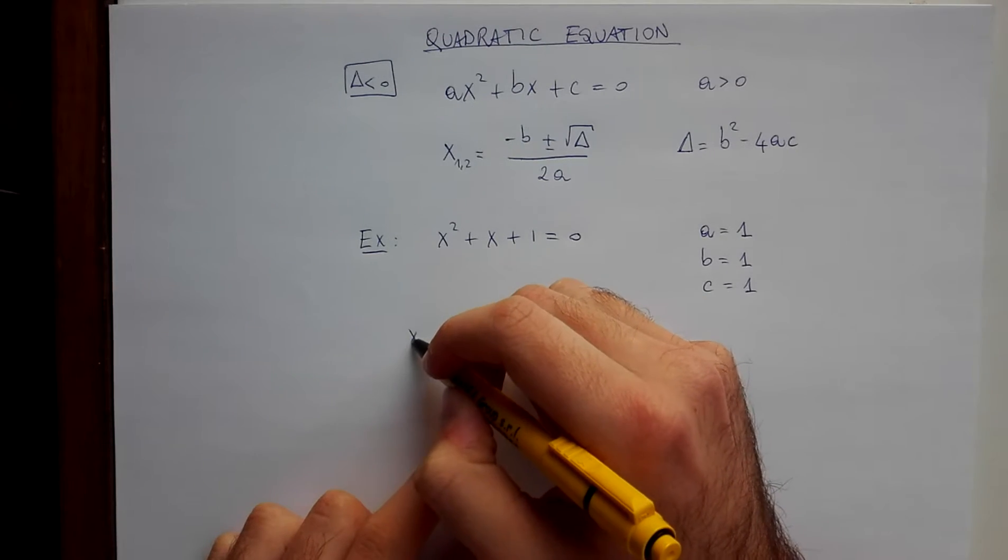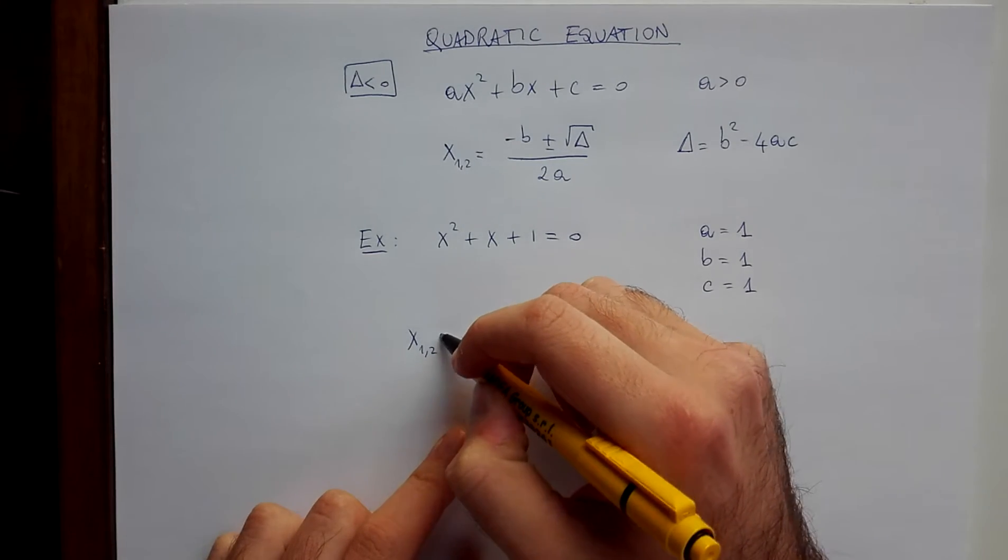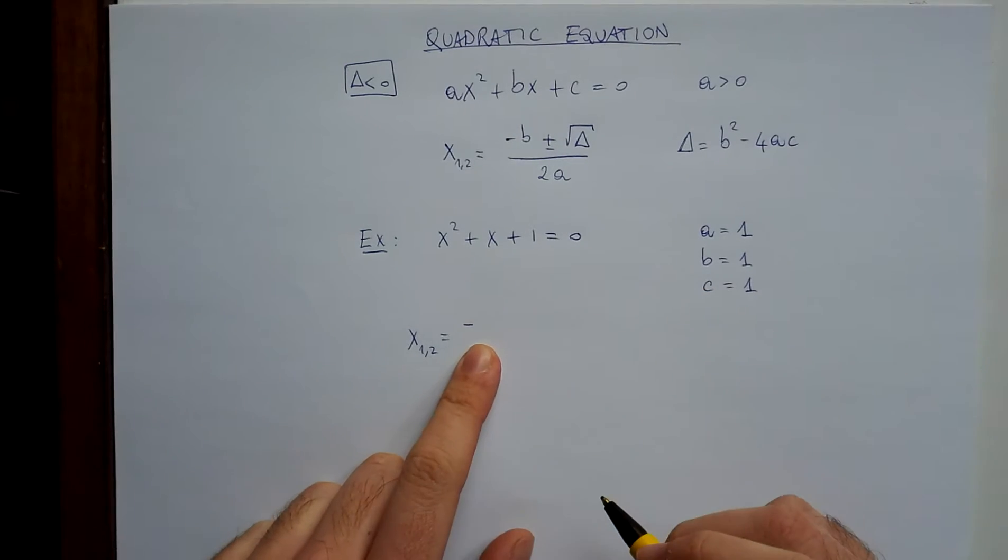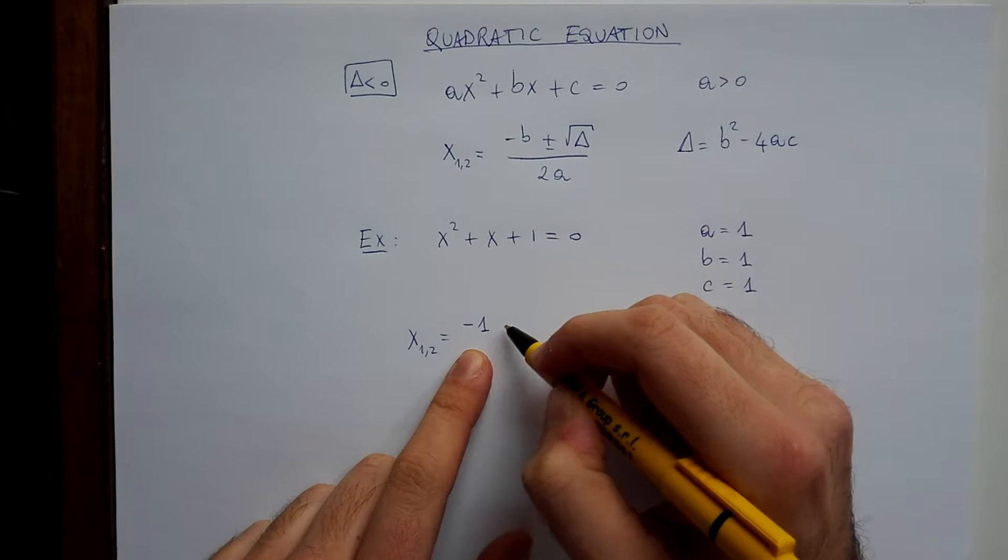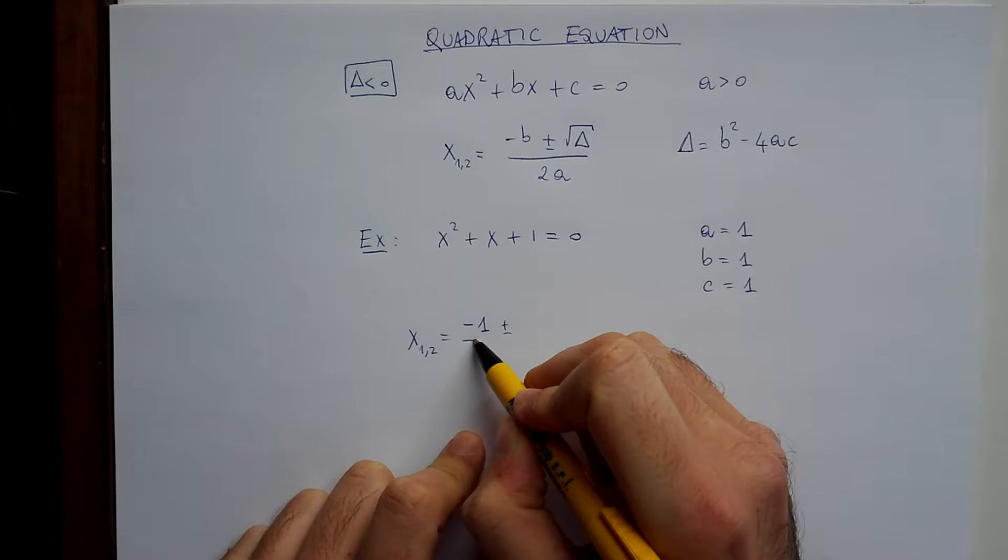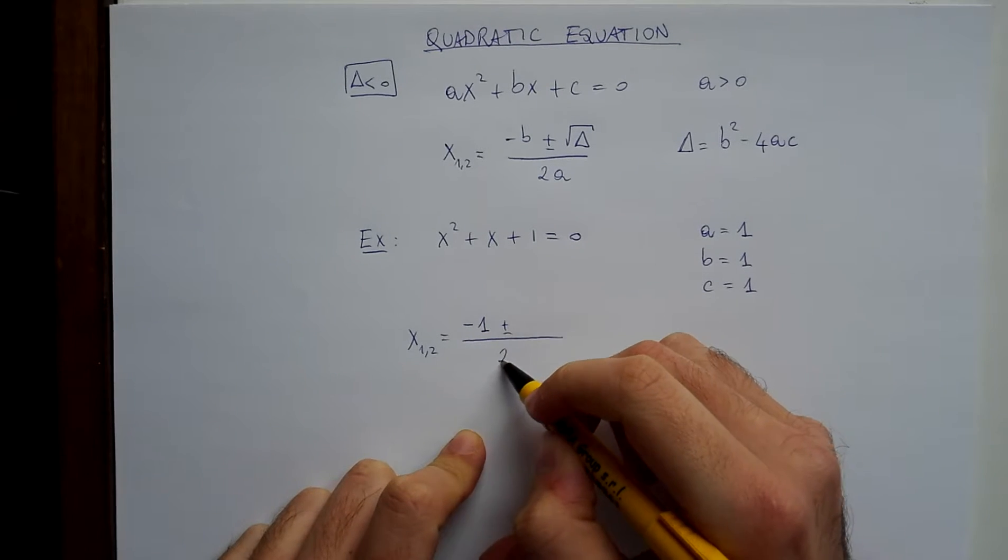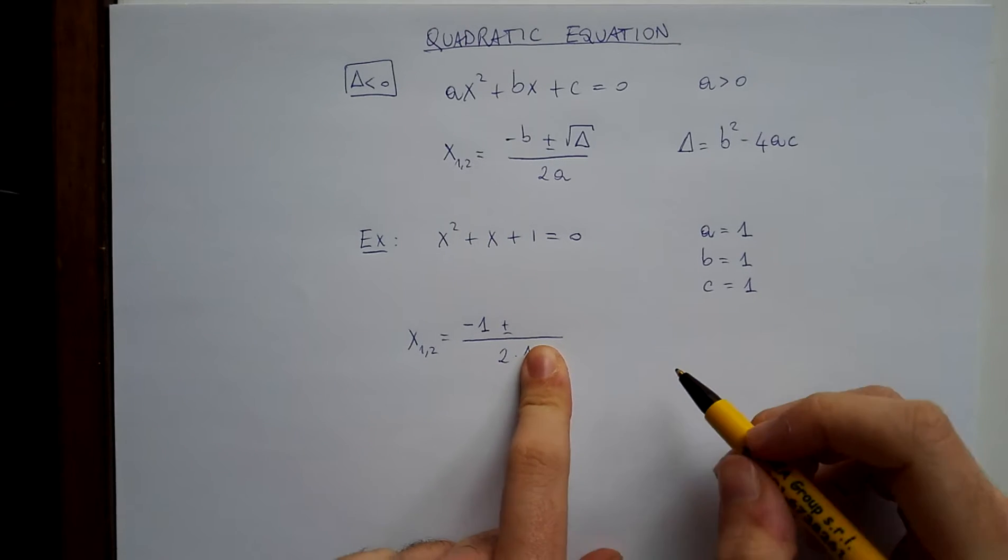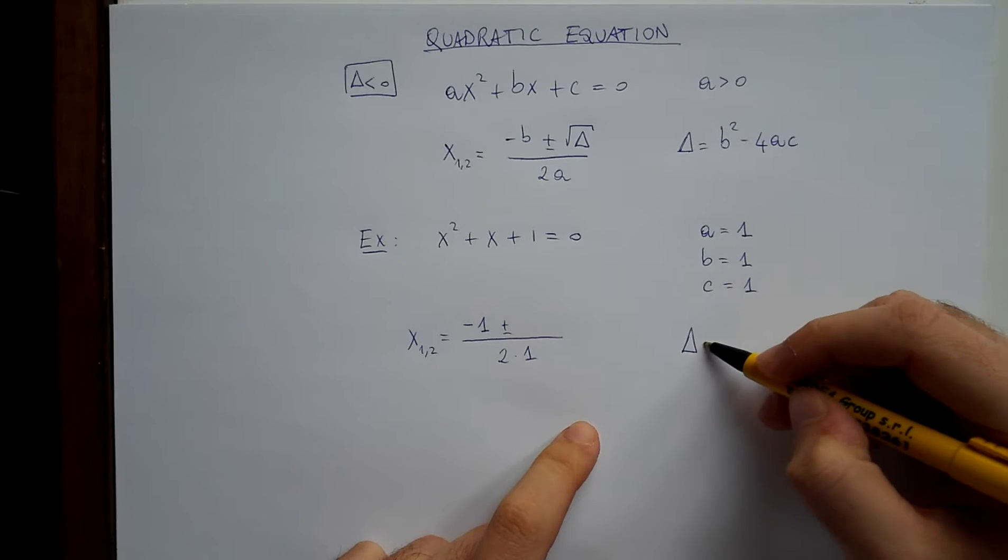Let's try to use the formula and see what happens. So minus b, then minus 1, plus or minus, let's leave some blank space, 2 times 1. Here, we should write square root of delta, but first, let's compute delta.